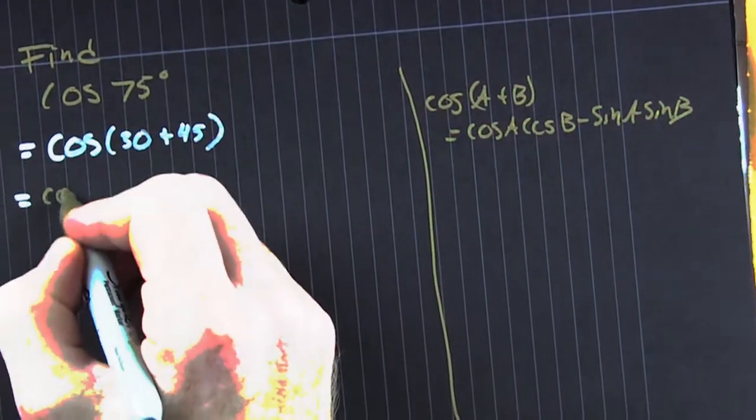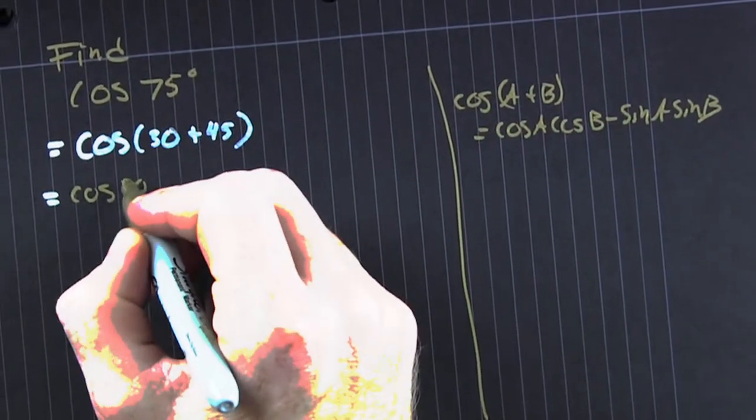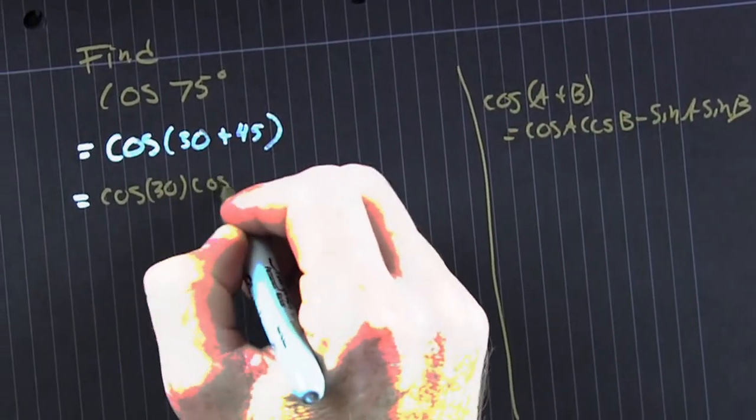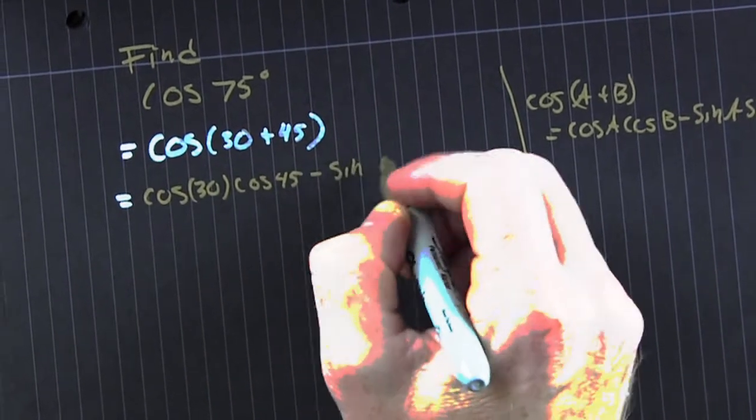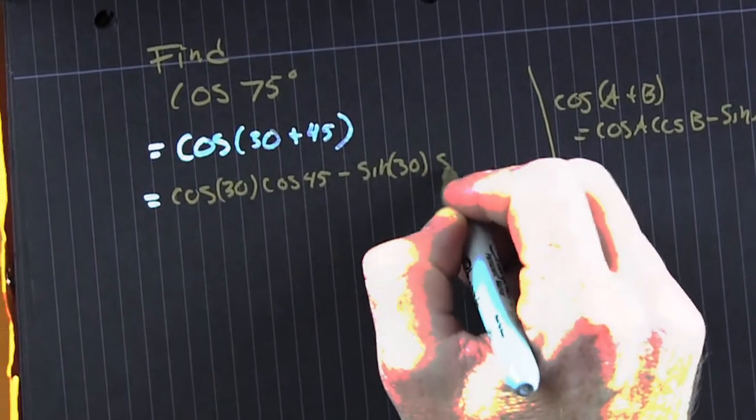Now we're going to plug those in appropriately. We see our A is 30 and our B is 45. So that's the cosine of 30 cosine of 45 minus the sine of 30 sine of 45.